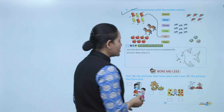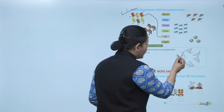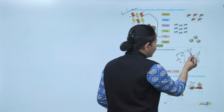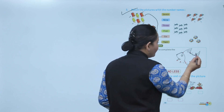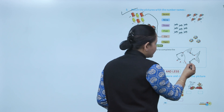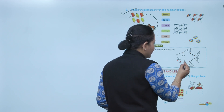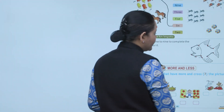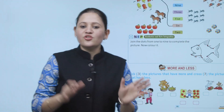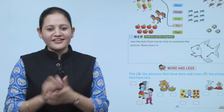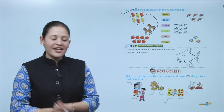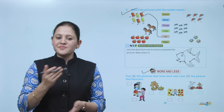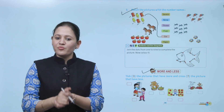Next, join the dots from one to nine to complete the picture and color it. Start from number one, then go to two, then three, then four, five, six, seven, eight — and like this complete the picture. Color it nicely.